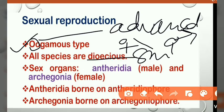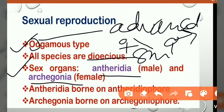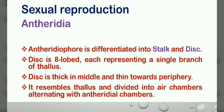All species are dioecious. Dioecious means male and female sex organs are present on different thalli, not on the same thallus. However, in monoecious species, male and female sex organs are present on the same thallus. The sex organs are antheridia in the male and archegonia in the female.